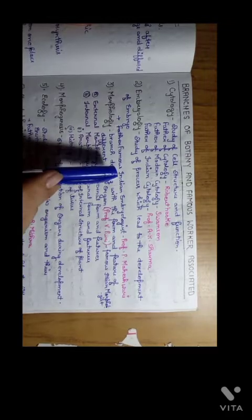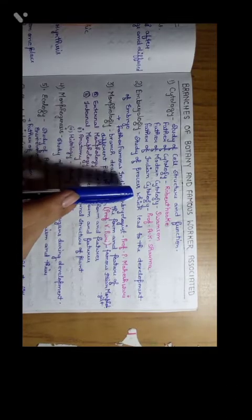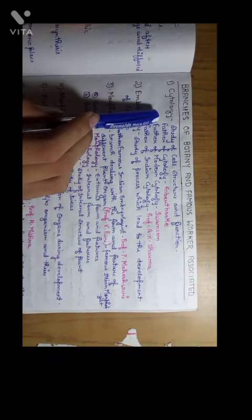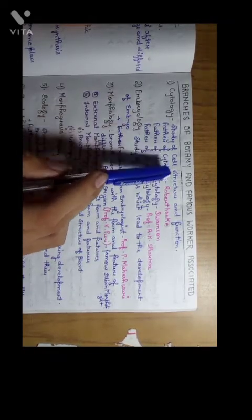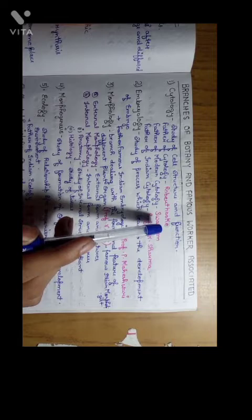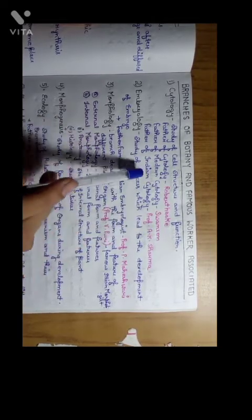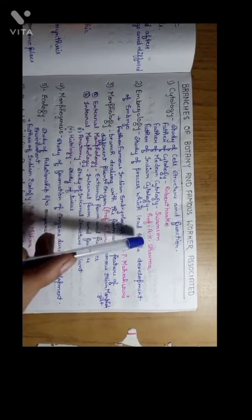Here we are going to study branches of botany and famous workers associated. The first branch is cytology. Cytology is the study of cell structure and function. The father of modern cytology is Swanson. The father of Indian cytology is Professor A.K. Sharma.